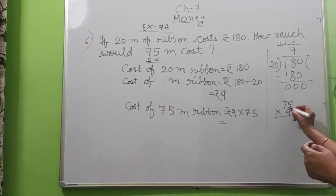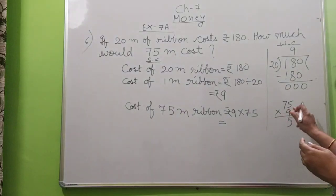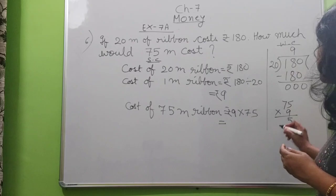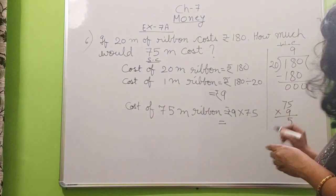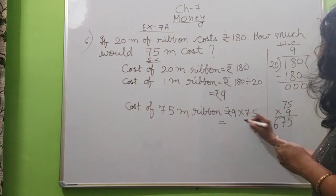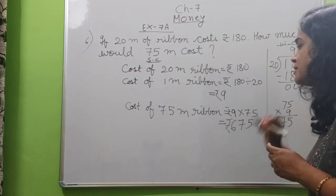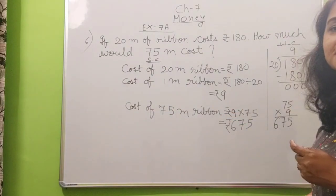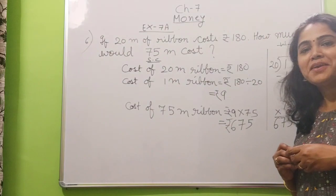It is 9 into 5 is 45, 4 in hand. 9 into 7 is 63, 64, 65, 66, 67. So our answer is 675 rupees. Sign must give because it is asking cost. So this way we solve the questions. Thank you.